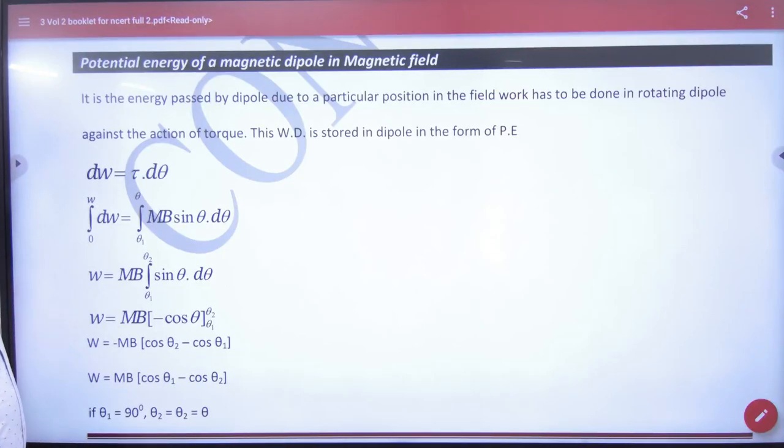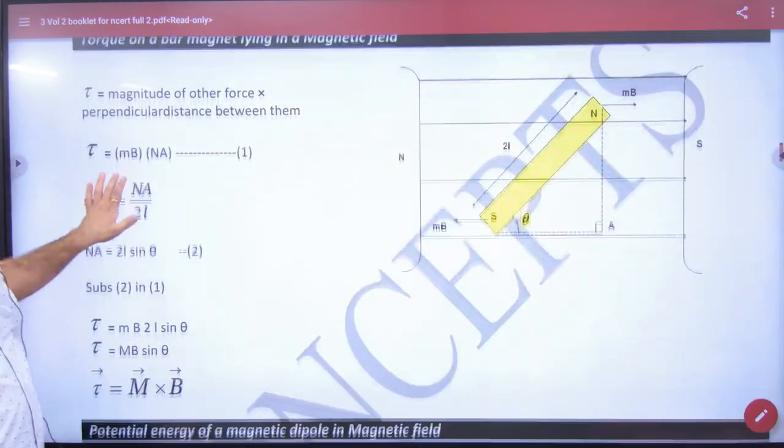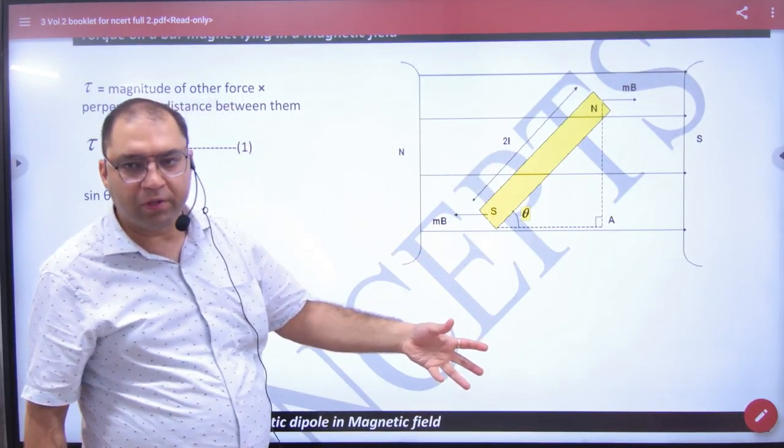So, potential energy of a magnetic dipole in magnetic field. Look, when you have a magnetic dipole in a magnetic field, it's aligned with the field.